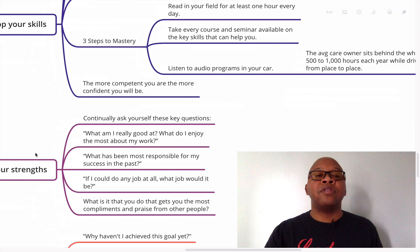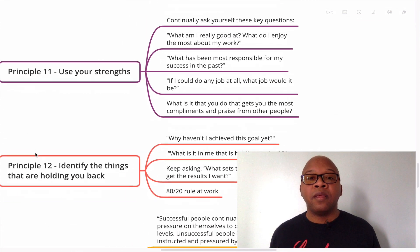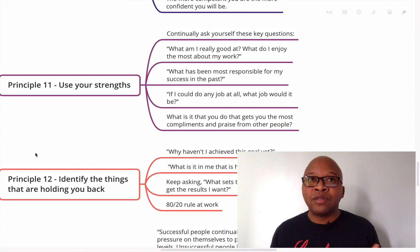Principle number 11 says, use your strengths. This is one of my tenets, one of the tenets of my message of unleashing your zebra as I travel across the nation and share with schools, organizations about finding their Zprint. I talk about how you can find your strengths and why it's important to do this. See, you've got to continually ask yourself these questions in order to use your strengths, to find your strengths. Here they are.